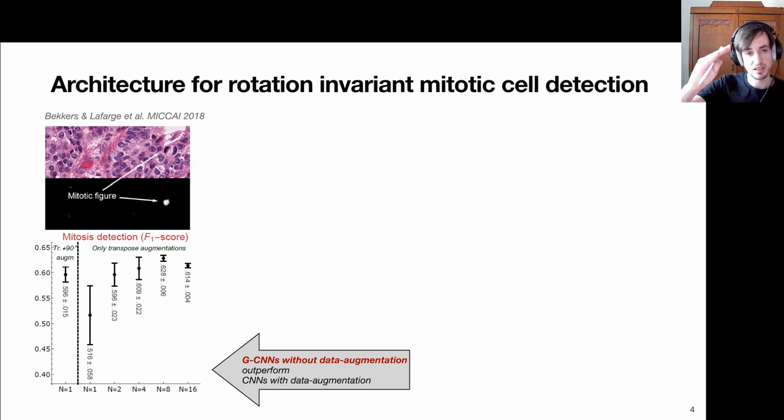Since here we use a finer discretization - 16 rotations for example - that means in our implementation we need 16 times more weights for these group convolution kernels. To keep the number of parameters fixed or approximately the same, we reduce the number of channels that are encoded by these group convolutional neural networks.